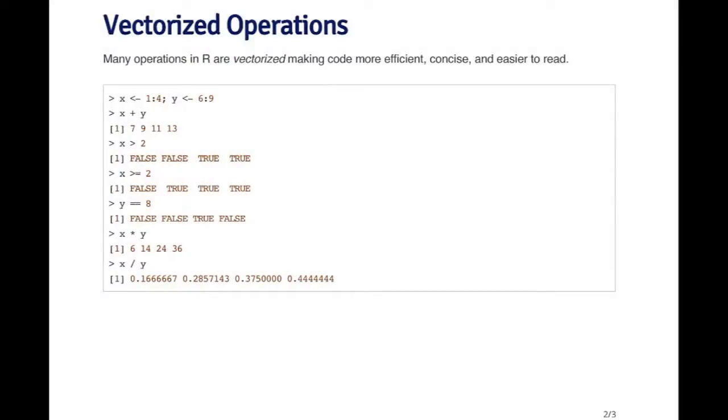The idea with vectorized operations is that things can happen in parallel when you want to do a computation. For example, suppose I have two vectors here, x and y. x is the sequence one through four, and y is the sequence six through nine. I want to add the two vectors together.